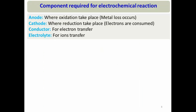For an electrochemical reaction to occur, we need four components: an anode (where oxidation and corrosion occur), a cathode (where reduction occurs), a conductor (for electron transfer), and an electrolyte (for ion transfer). A question arises: in a refinery, we never connect two electrodes with a wire, so how does electrochemical corrosion occur?